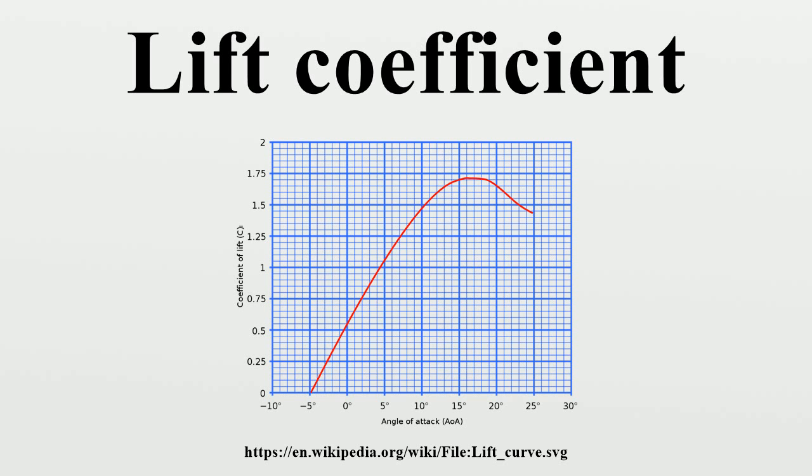Symmetric airfoils necessarily have plots of CL versus angle of attack symmetric about the CL axis, but for any airfoil with positive camber, i.e. asymmetrical convex from above, there is still a small but positive lift coefficient with angles of attack less than zero. That is, the angle at which CL equals zero is negative. On such airfoils at zero angle of attack, the pressures on the upper surface are lower than on the lower surface.